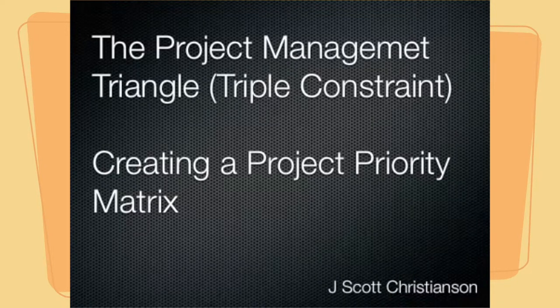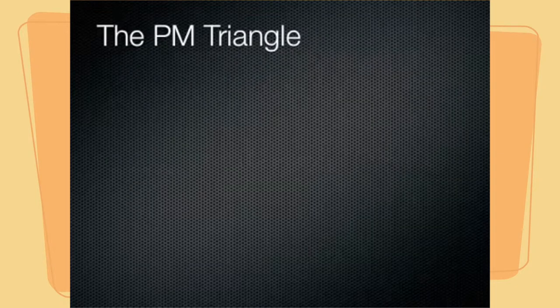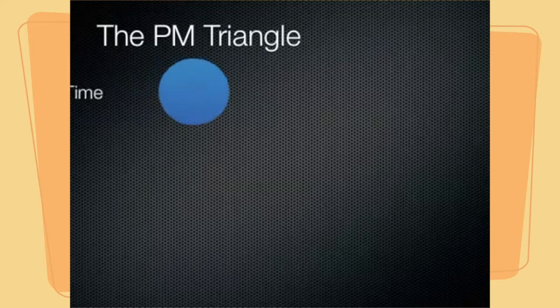Welcome to this short video explaining the Project Management Triangle, also known as the Project Management Triple Constraint, and how we can create a Project Priority Matrix. The Project Management Triangle consists of three critical aspects of all projects.